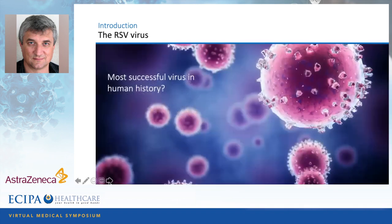I want to argue this is most likely one of the most successful viruses in human history. Seventy years down the line, we still don't have any specific treatment against RSV virus, whereas we now have antiviral treatments for SARS-CoV-2 already. Similarly, 70 years on, there's still no successful vaccine against RSV virus — many attempts have failed — whereas we've achieved remarkable vaccines against COVID.